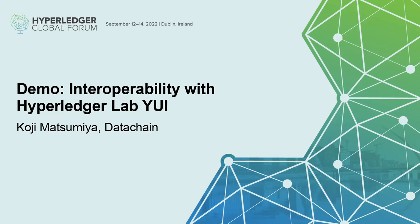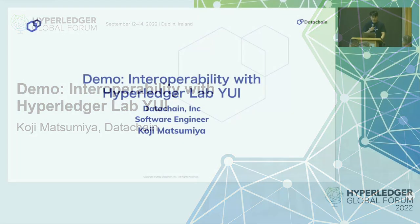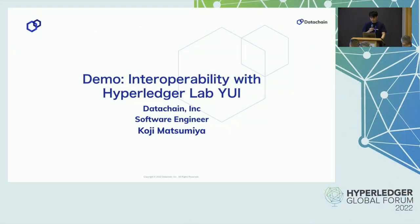Hello everyone. I'm Koji Matsumura. I'm a software engineer at the Data Chain in Japan. Welcome for joining me in this session. I'm going to talk about Hyperledger Lab YUI that enables interoperability between multiple different blockchains.